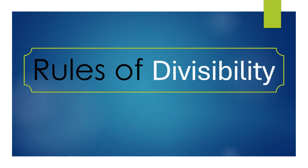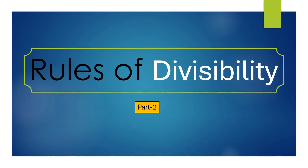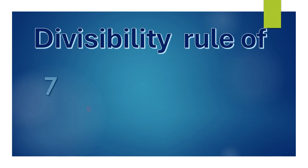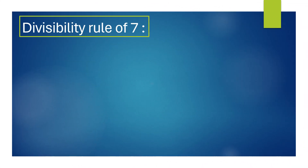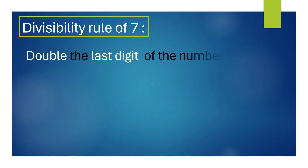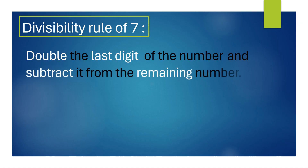In this video, we are learning about rules of divisibility. Divisibility rule of 7: we need to double the last digit of the number and then subtract it from the remaining number.